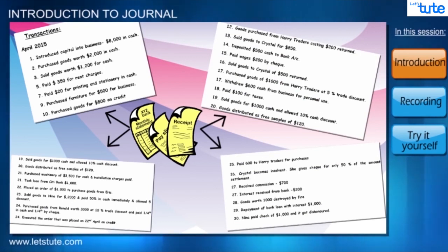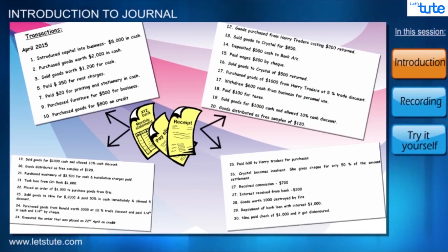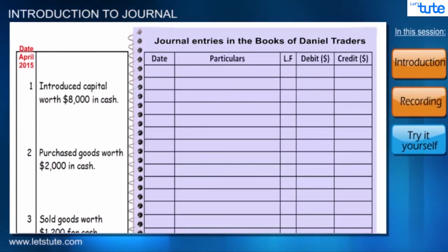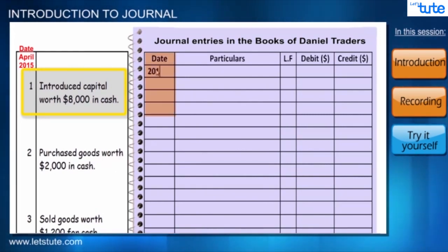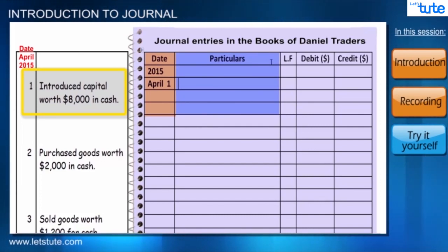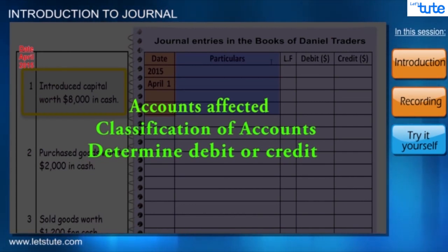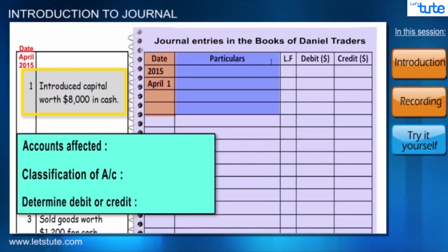We will learn how to fill these columns with entries in a short while. We have around 30 transactions from the source documents of Daniel's business from this past month, and we will try to record at least 10 of these in this session. The first transaction is capital introduced: 8,000. In the date column we write the year at the top and in the next line the month and date of the transaction. In the second column we record the accounting entry. As we learned in our debit and credit session, there are three steps: accounts affected, classification of accounts, and determining debit or credit. Here in the first transaction the two accounts affected are cash account and capital account.